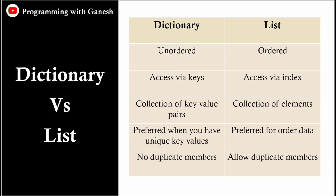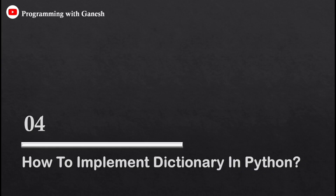Now let's see the difference between dictionary and list. The list is ordered; the dictionary is unordered — though in Python 3.7 and later versions, the dictionary is ordered. In a list we access values via index, but in a dictionary we access via key. A list is a collection of elements, while a dictionary is a collection of key-value pairs. A list is preferred for ordered data; a dictionary is preferred when you have unique key values, since dictionaries don't allow duplicate keys but lists allow duplicate members.